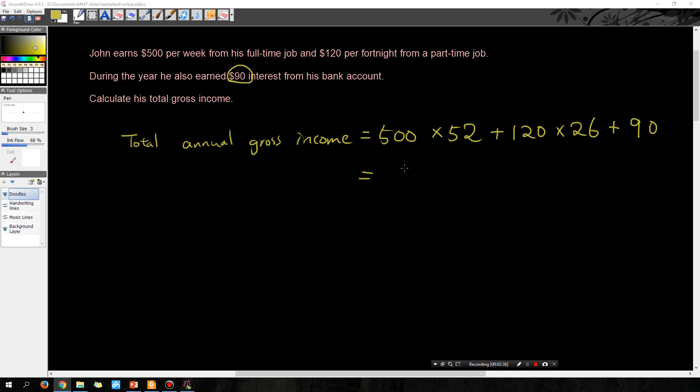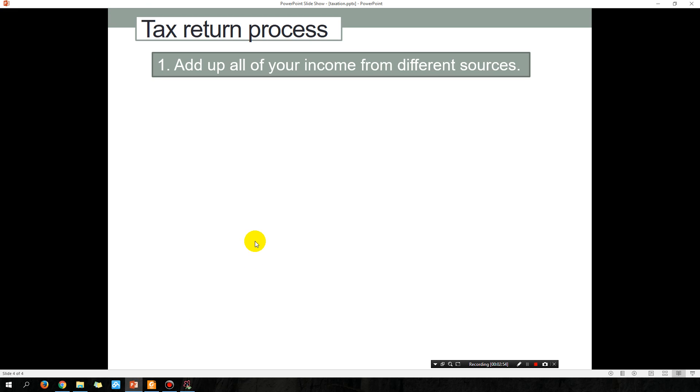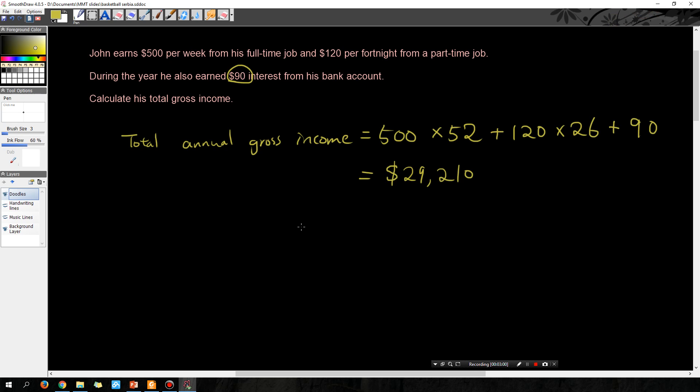So let's type all that into the calculator and you will get $29,210. So that is your total gross income—the money that you earn without any deductions. Let's go to step two: add up your deductions, work-related expenses.